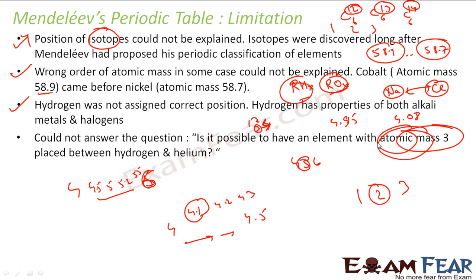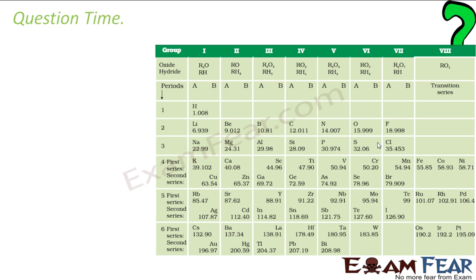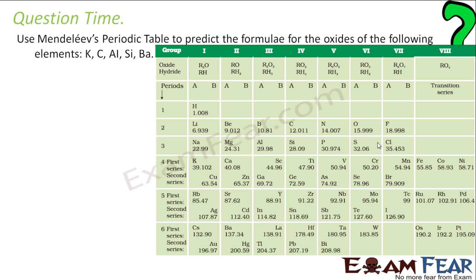So these kind of limitations were there with modern periodic table. Let's see some questions. Using your Mendeleev's periodic table, predict the formula of oxides for all these. Let's do that. So if you see the first one is K, potassium. Let's see where K is. K is here, right?